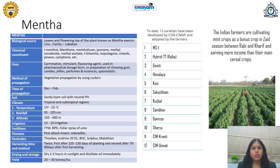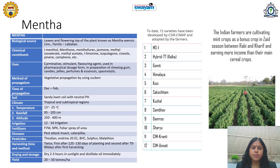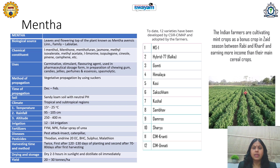20 to 30 tons of leaves or flowering tops can be obtained from 1 hectare. To date, 12 varieties have been developed by CSIR's Central Institute of Medicinal and Aromatic Plants, Lucknow, adopted by farmers for mentha cultivation: MS1, Hybrid 77 (Kalka), Gomati, Himalaya, Kosi, Saksham, Kushal, Sambahu, Damru, Sharayu, CIM Kranti, and CIM Unnati.